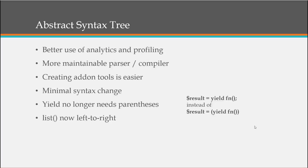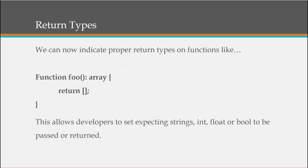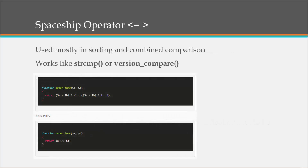We'll get into AST a little later on. We can now indicate proper return types on functions — for example, a function returning an array. This allows developers to set expected return types such as strings, integers, floats, booleans, or whatever you want returned from a function.